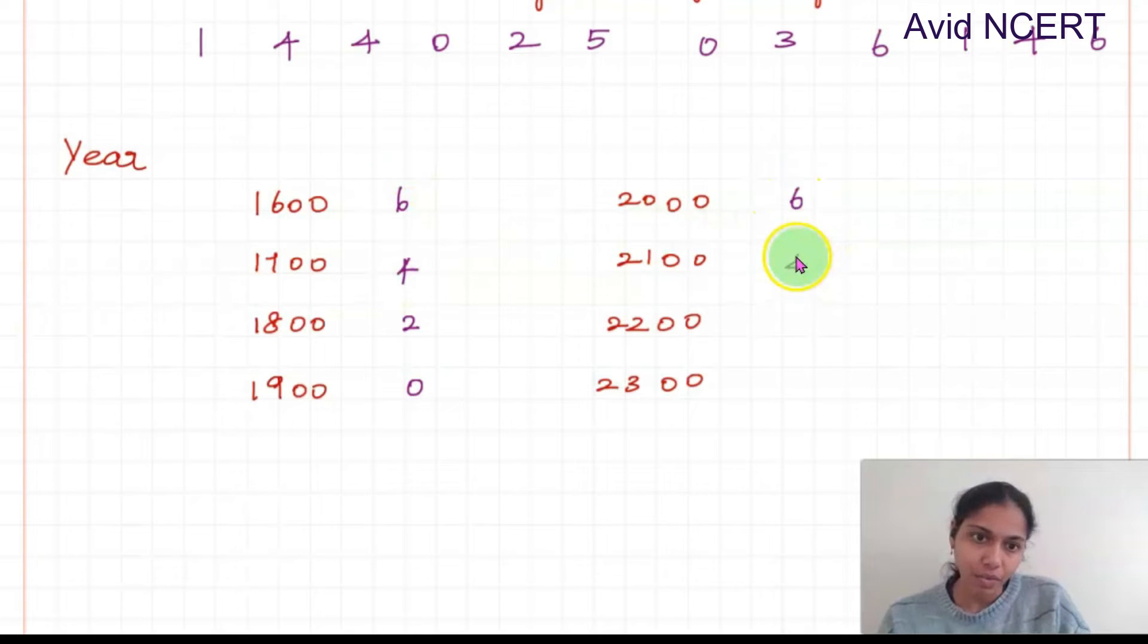So just the same thing again, 6420. You could memorize any way whichever is easier for you.